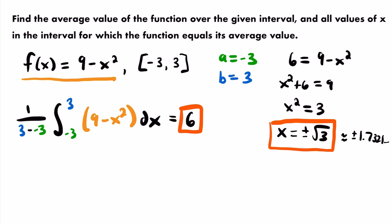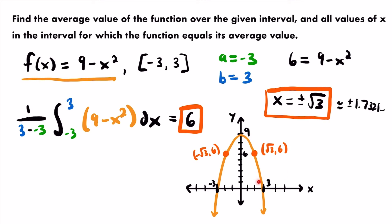Looking at the graph: the upside-down parabola 9 minus x squared on the interval from negative 3 to 3. When we say the average value is 6, we mean that on average, the y value corresponding to x values on this interval is 6. The two points where the function equals its average value are (negative √3, 6) and (positive √3, 6), which are both plotted on the function.